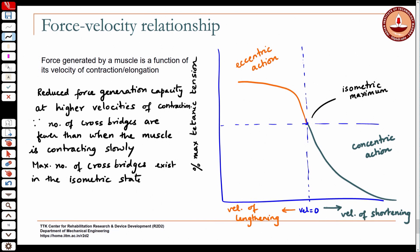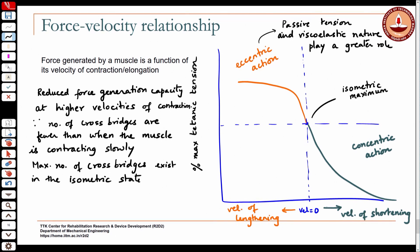In the eccentric action, passive tension and the viscoelastic nature of the tissue play a greater role. This force-velocity relationship only holds when talking about maximal effort — when the muscle is subjected to maximum isometric effort. Usually we are not using our muscles to their full capacity, as there are multiple actuators in parallel for power generation most of the time.